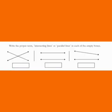Write the proper term, intersecting lines or parallel lines in each of the empty boxes. The first two lines are known as intersecting lines because these two lines are intersecting each other at one point. Second two lines are known as parallel lines. They are not going to meet each other anywhere.